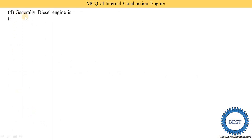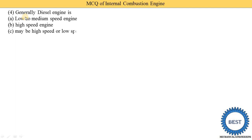Next MCQ: the diesel engine is generally — option A: low to medium speed engine, option B: high speed engine, option C: high or low speed engine, option D: all of the above. Option A is the correct answer. The diesel engine is generally a low to medium speed engine. If asked about the petrol engine, the petrol engine is a high speed engine.